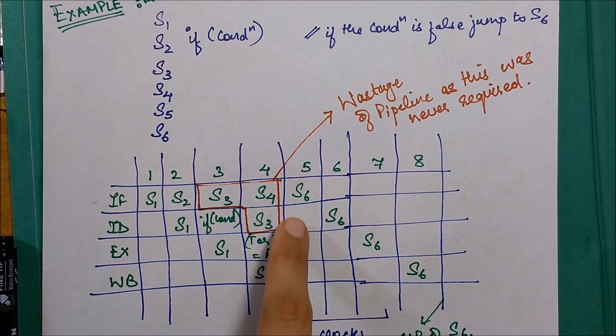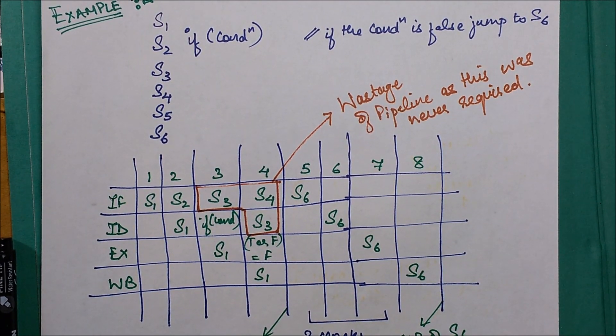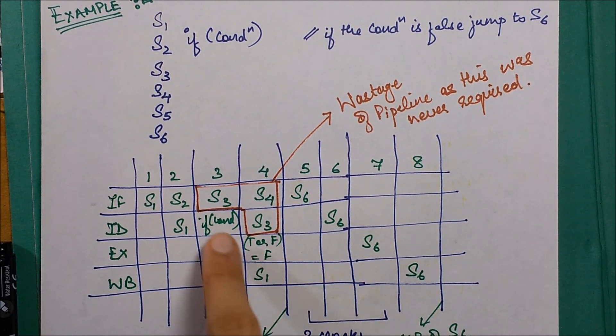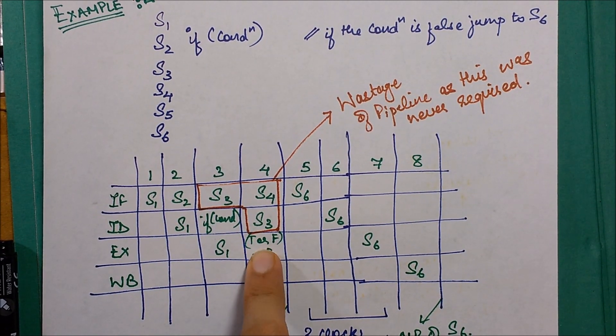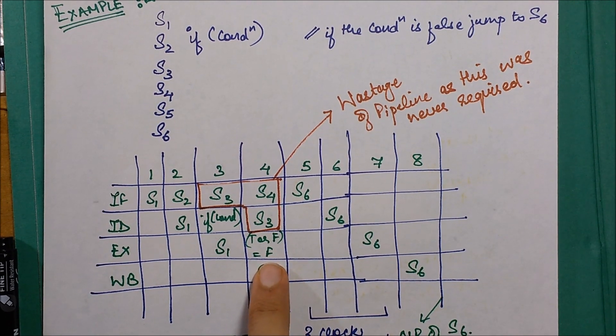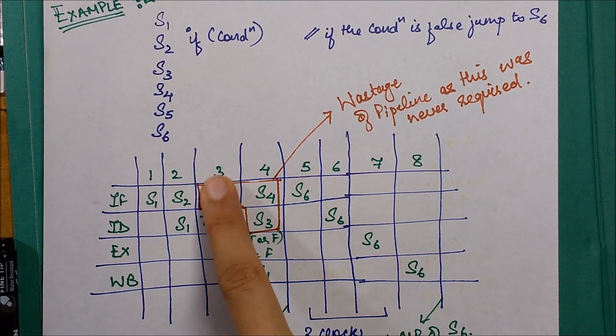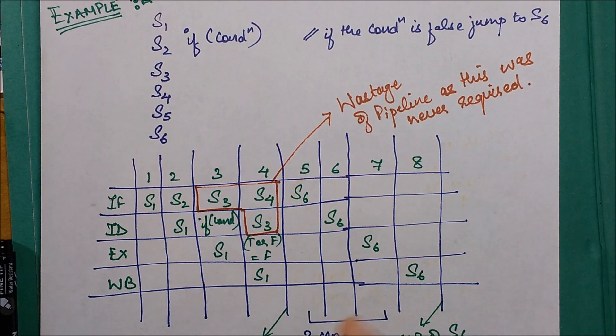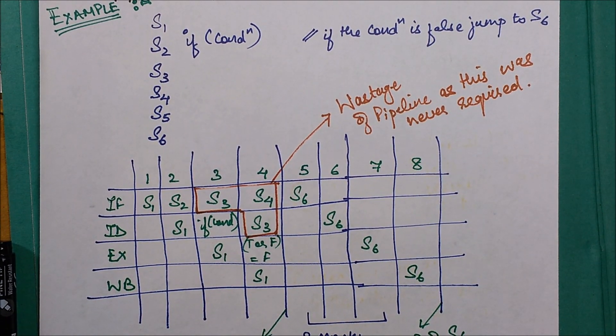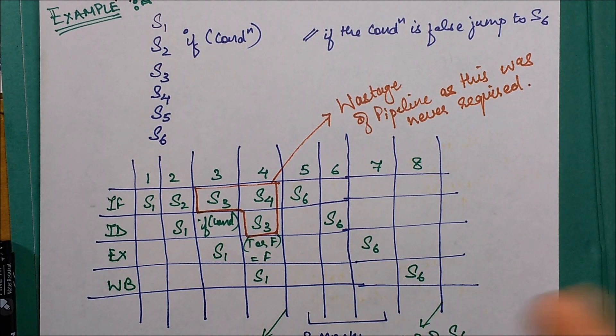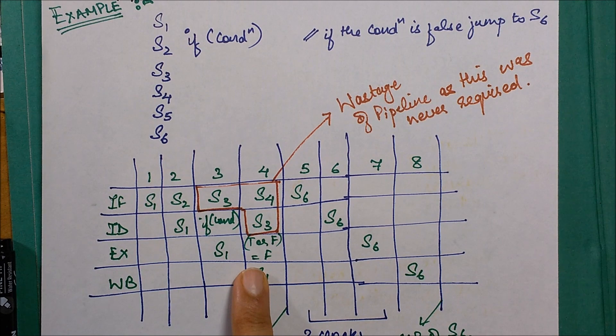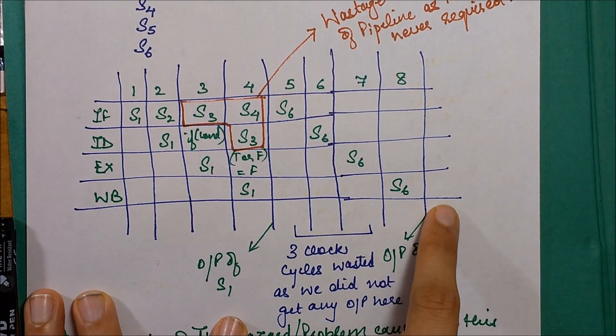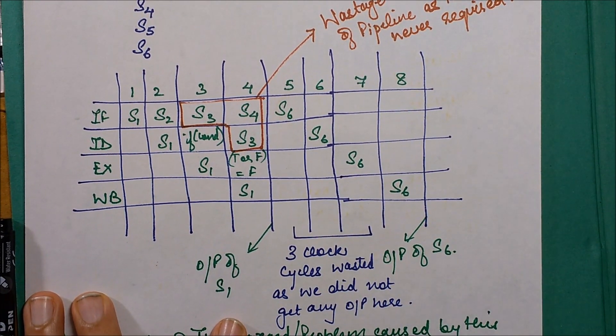This could actually be avoided if I was somehow able to know about the result of this if condition earlier. There is no use of processing these instructions till I'm able to get this result. This is basically your control hazard. If somehow I was able to get the result of this if condition earlier, then this would have not resulted in the wastage of three clock cycles. I'm getting the result delayed by three clock cycles, otherwise this S6 processing would have started over here.